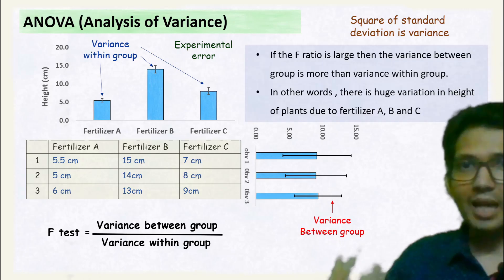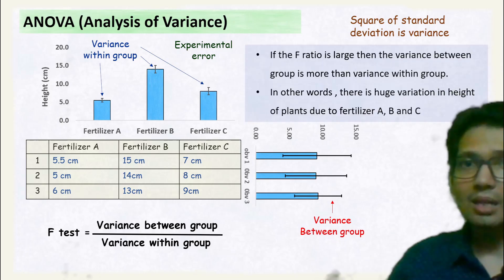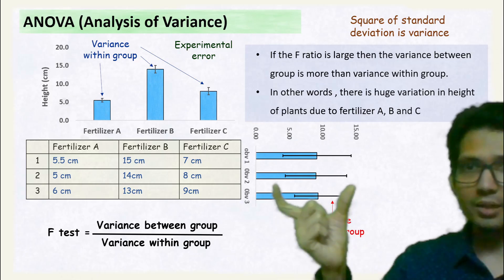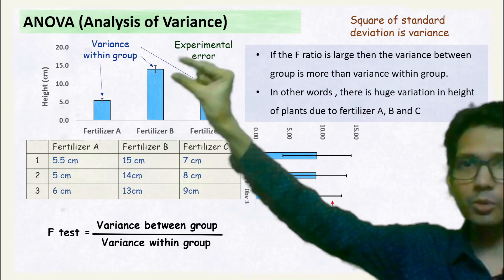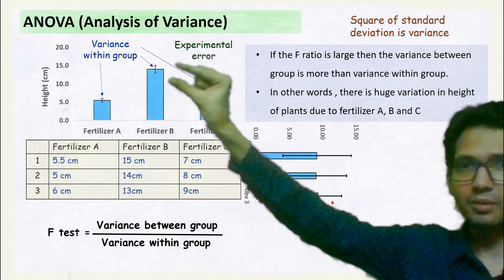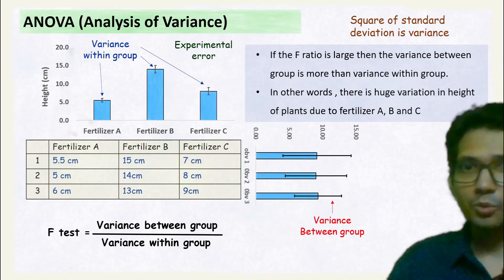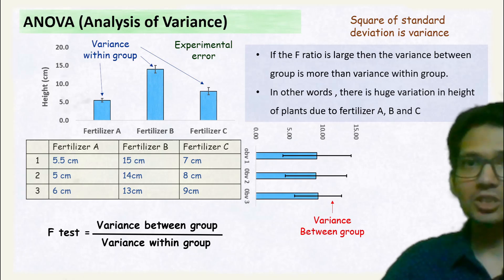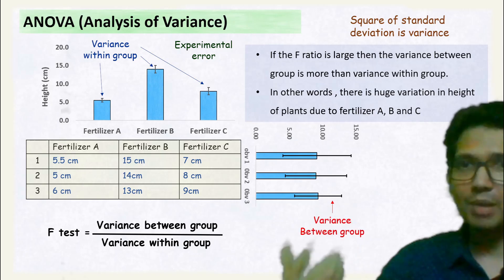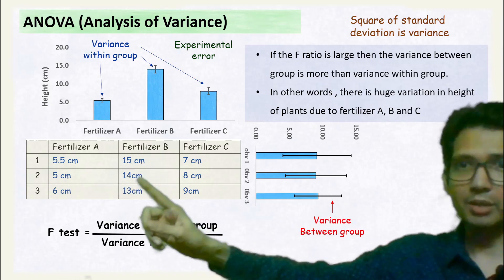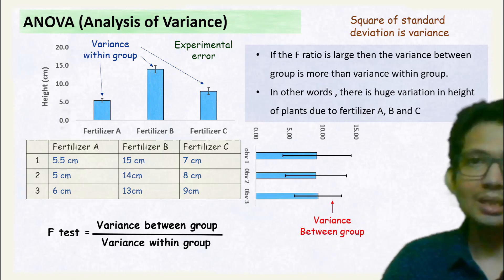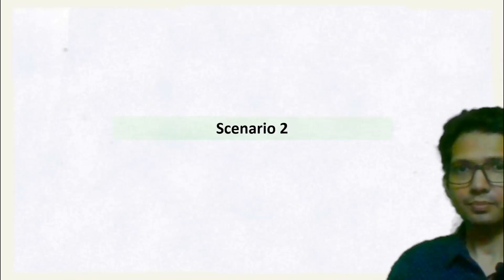So if the F ratio is large, then the variance between group is more than the variance within group. In other words, you can say there is a huge variation in the height of the plant because of Treatment A, Treatment B, and Treatment C.